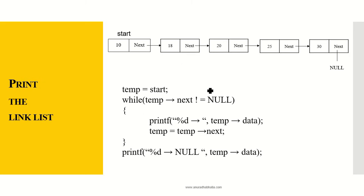Now we need to print the updated linked list. We again set temp = start and use the same printing procedure as before.